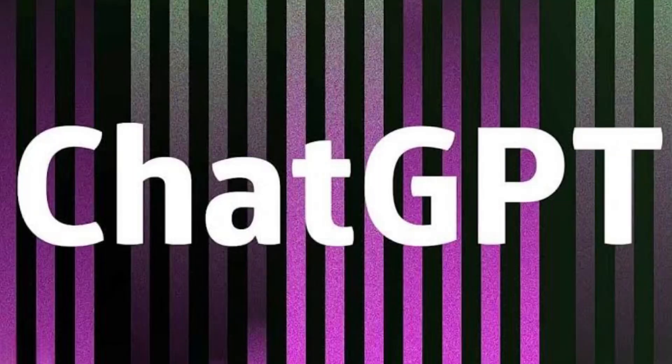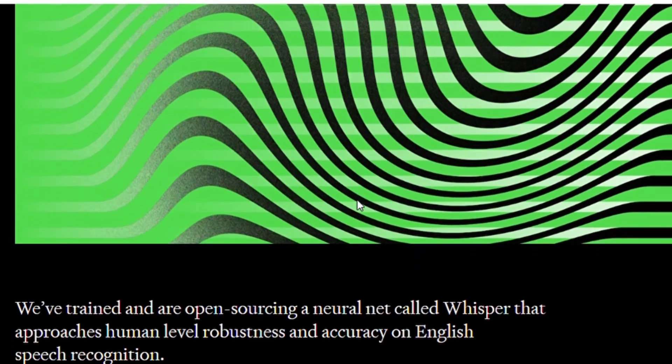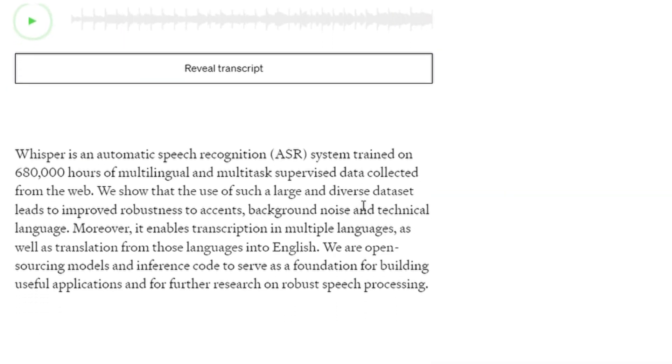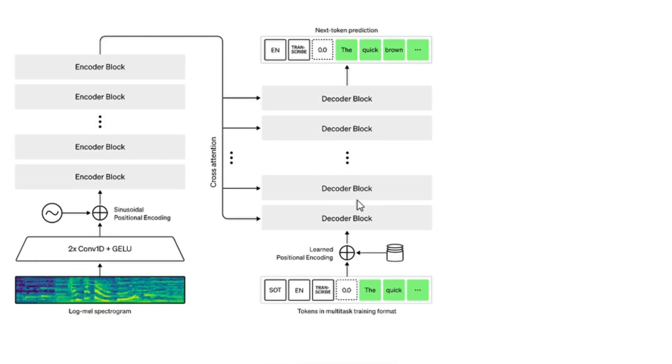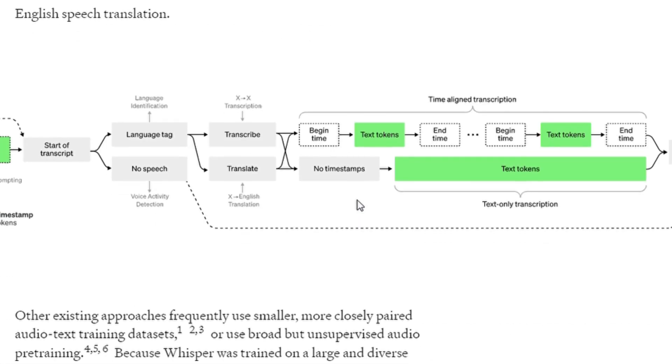The best part is that it's completely free and also open source. We are going to use an AI tool called Whisper. Whisper is made by a company called OpenAI — you might have heard of them before. That's the same company behind the immensely popular ChatGPT. Whisper is an automatic speech recognition system trained on 680,000 hours of multilingual and multitask supervised data collected from the web.